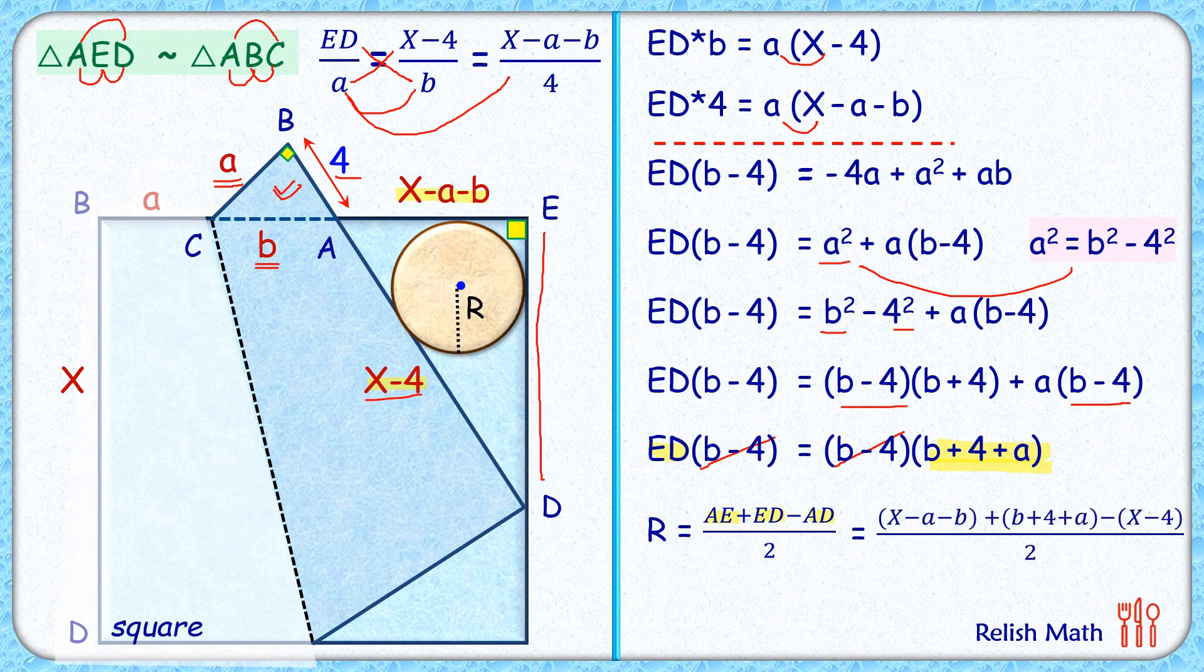So these values, when we'll solve it, the amazing factor is here everything will get cancelled down. This x will get cancelled with -x, -a with +a, and -b with +b. So numerator we are left with +4 + 4, that is 8. 8 divided by 2, the inradius is 4 centimeter, and that's our answer.